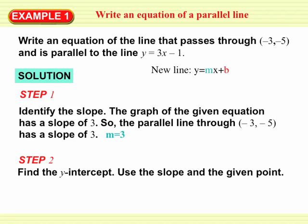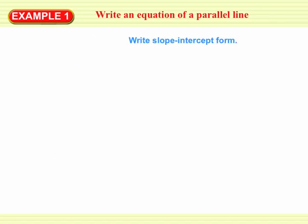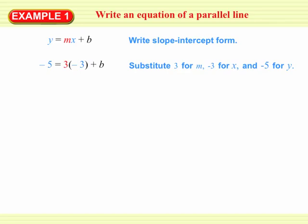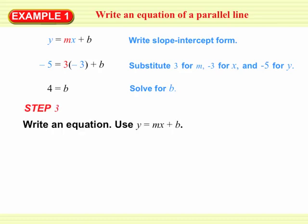Next, I need to find the y-intercept. I take the slope found in step 1 and the single point given — negative 3 comma negative 5 — and plug them into the equation to solve for b. We substitute 3 for m, negative 3 for x, and negative 5 for y. Now we have an equation with a single variable b, and when we solve it, we get b equals 4.